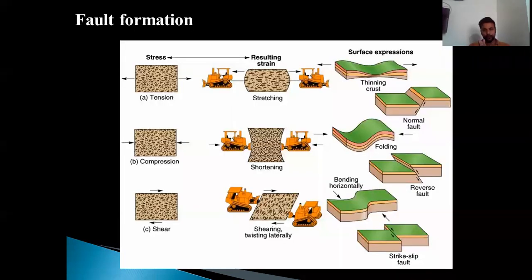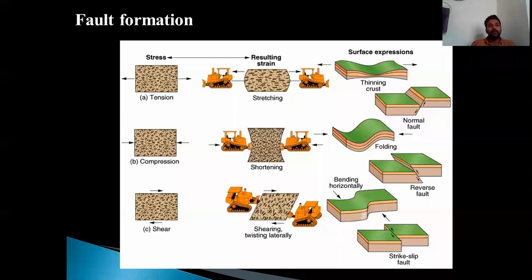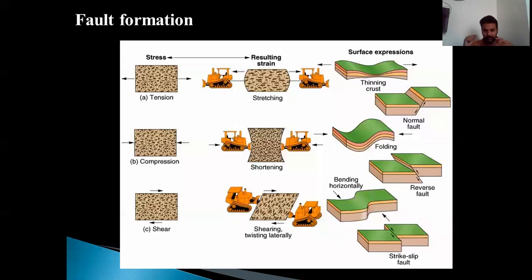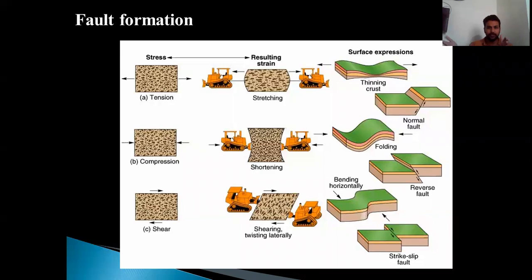Let us discuss about the formation of faults. Folds and faults are dual structures formed under the effect of stress — they are the resultant features. For example, if your rock bed is subjected to tensional stress, if you pull the rock from both sides, the tensional stress will apply, the surface will expand, the crust will start thinning, and ultimately this gives rise to a normal fault. In the second case, when rocks are compressed from both sides, they shorten themselves and folding may happen.